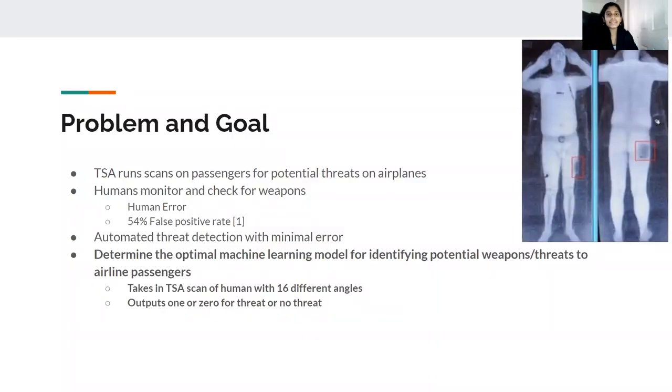The TSA performs millions of image scans of travelers through security checkpoints. These scans are essential in preventing threats from entering public modes of transportation. The current system has many flaws, and a study done by ProPublica has revealed that these scans have a 54% false positivity rate. Our goal is to test different machine learning models and determine which model is most effective in detecting weapons and threats on passengers. We will do this by taking in TSA scans given to us by a Kaggle competition and analyzing the body scan in 16 different angles.